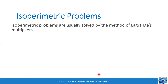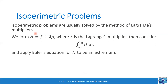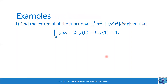Isoperimetric problems are usually solved by the method of Lagrange multipliers. We form H, a new function equal to f + λg, where λ is the Lagrange multiplier. Then consider the integral from x1 to x2 of H dx and apply Euler's equation for H to be an extremal, that is, H is a minimum or maximum. Let us solve some problems.